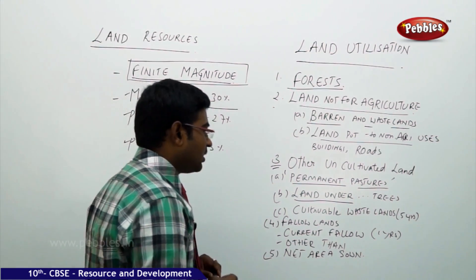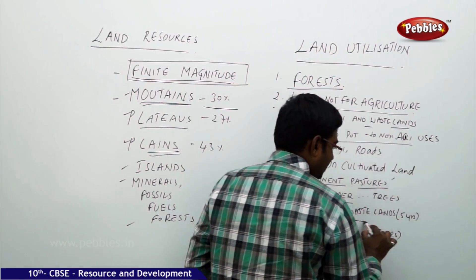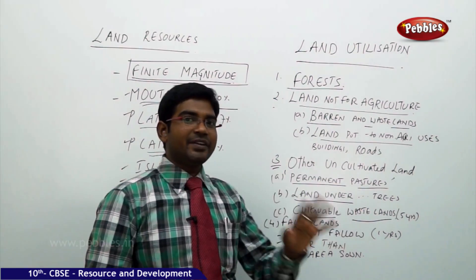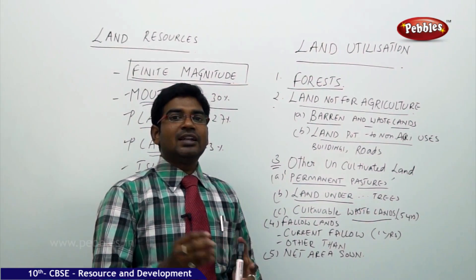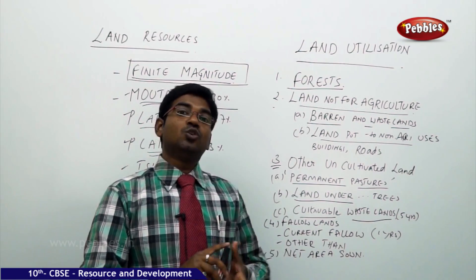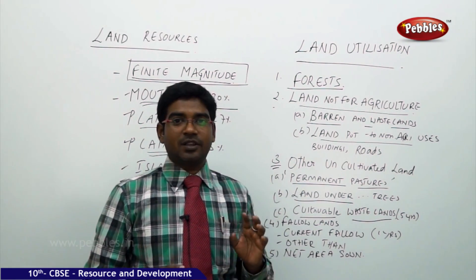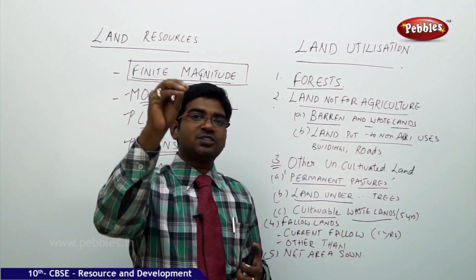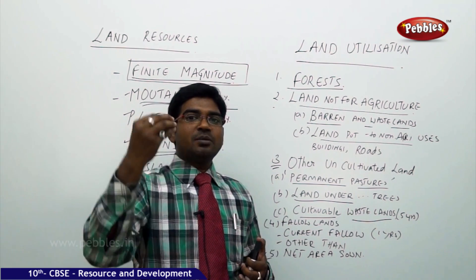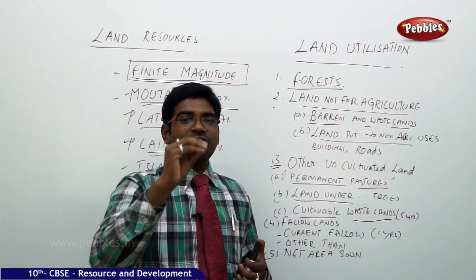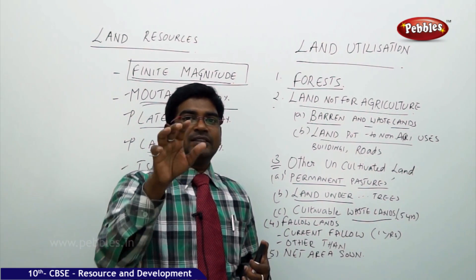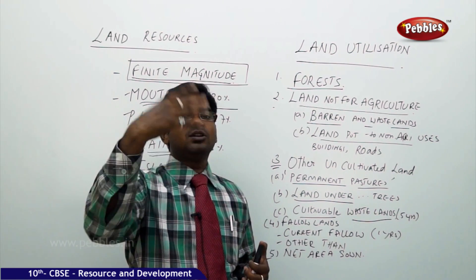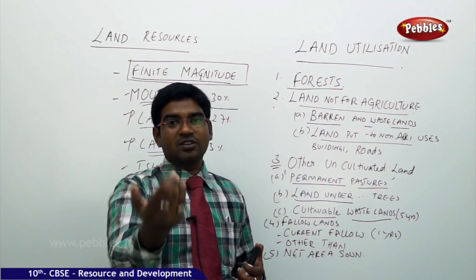Moving on to cultivable wastelands — lands that have not been cultivated for the past five years. You can cultivate there and do agriculture there, as there is a possibility of doing agriculture. But because of lack of water over five years, or because the particular family is economically weak or facing financial crisis, they have had to stop cultivation. As a result, it is called cultivatable wasteland — it can be cultivated but is not being cultivated.